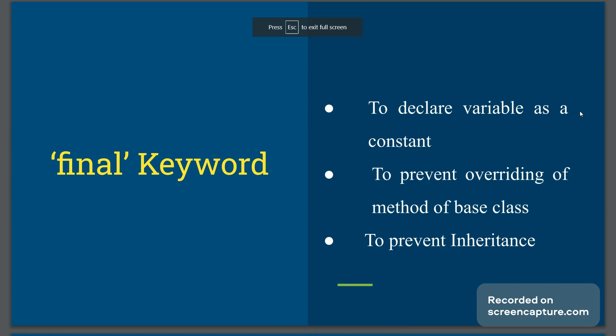In this session we have seen the three uses of the final keyword. First: to declare a variable as a constant — you cannot assign a new value to a final variable. Second: to prevent method overriding — if a method in the base class is declared as final, the derived class cannot have a method with the same name and same signature. Third: to prevent inheritance — if you declare a class with the final keyword, it cannot be extended by another class.